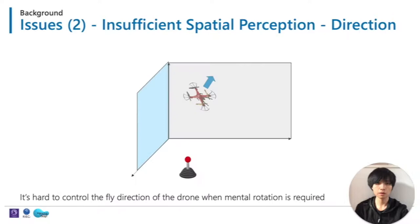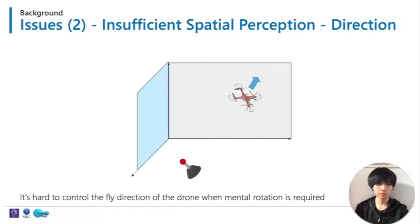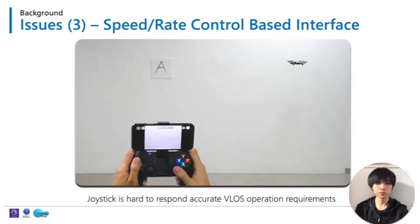The second issue is insufficient spatial perception of direction, which will lead to a problem called mental rotation. In drone operations, generally you fly a drone like this, but sometimes you have to rotate the drone. If you forget to rotate the drone in your mind, incorrect operations can happen. Taking the most famous interface, the joystick, as an example — to stop the drone at point A accurately, the user has to adjust many times, which is not so easy.